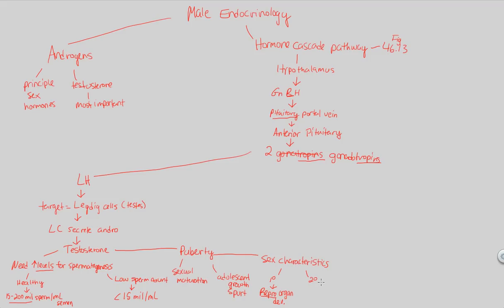Secondary sex characteristics are much more visible — visible signs of manhood. Primary sex characteristics are mainly internal, but secondary ones are very visible. These include facial and body hair, a deeper voice — the deepening of the voice being a secondary sex characteristic — and increased muscle development. All these are physical, viewable secondary sex characteristics resulting from puberty, which comes from testosterone levels produced by Leydig cells on this hormone cascade pathway.